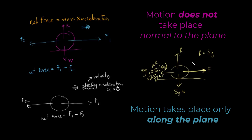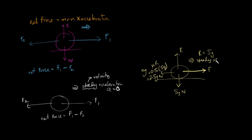It is given that this object is moving forward but with a steady speed. Steady speed means acceleration is 0. So the question is: find the value of the forward force, find the value of F.